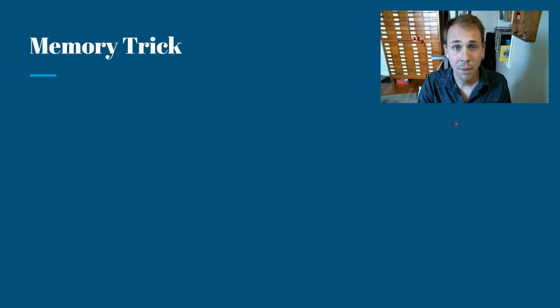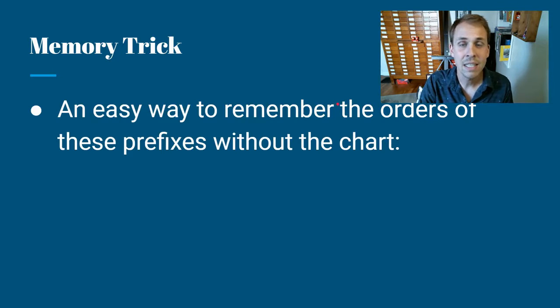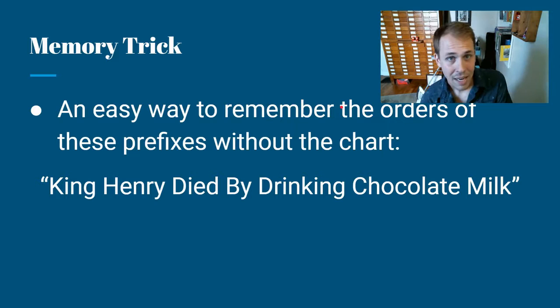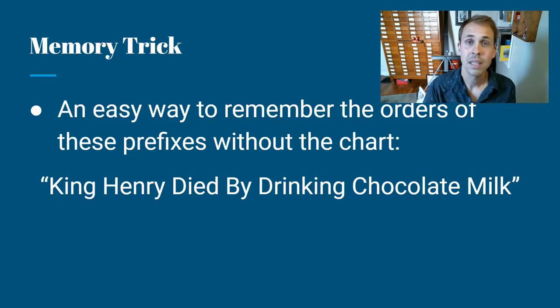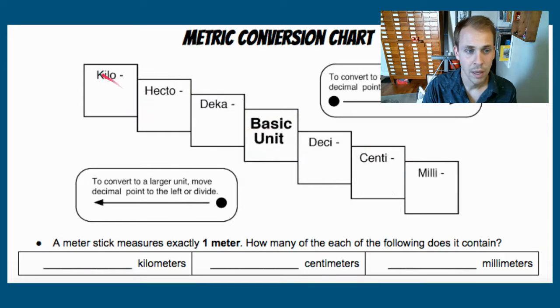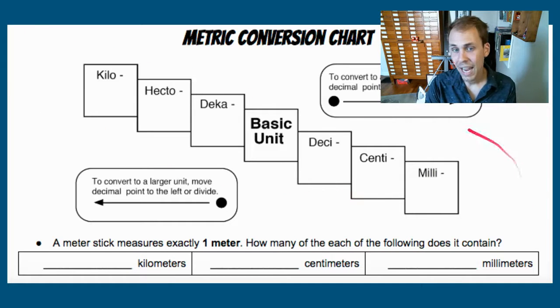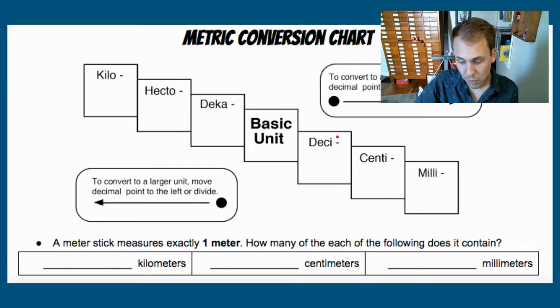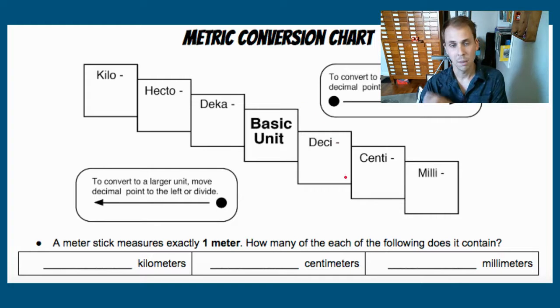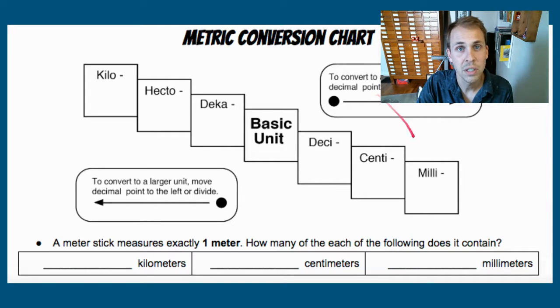A memory trick for memorizing the order of that step is this saying, King Henry died by drinking chocolate milk. If you remember that little sentence, it tells you the order of the metric chart. So each letter here represents a letter on that step. So K for kilo. So let's go back to that real quick. So K kilo for King. King Henry died. The B is for base unit. So King Henry died by drinking chocolate milk. So let's say you had a test, and you weren't given this, and you wanted to write it down on a piece of paper and get it out of your brain real quick. Or let's say you took physics next year, and you wanted that conversion chart. As long as you remember King Henry died by drinking chocolate milk, you could draw a little staircase, and you could easily do some conversions in the metric system.